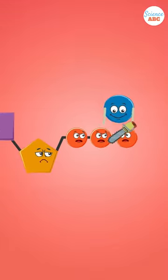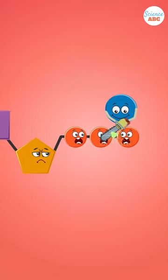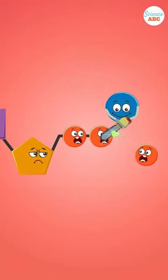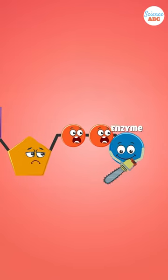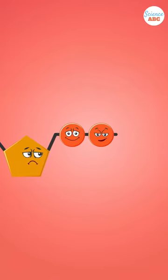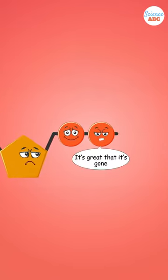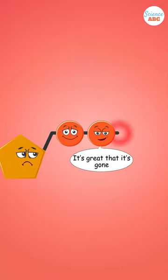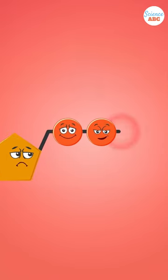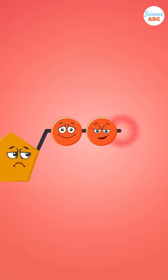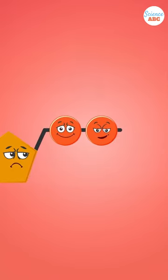So, when an enzyme breaks the bond holding the two phosphates together, it relieves some of the electrostatic repulsion, which results in a release of energy that the cell can use to do work.